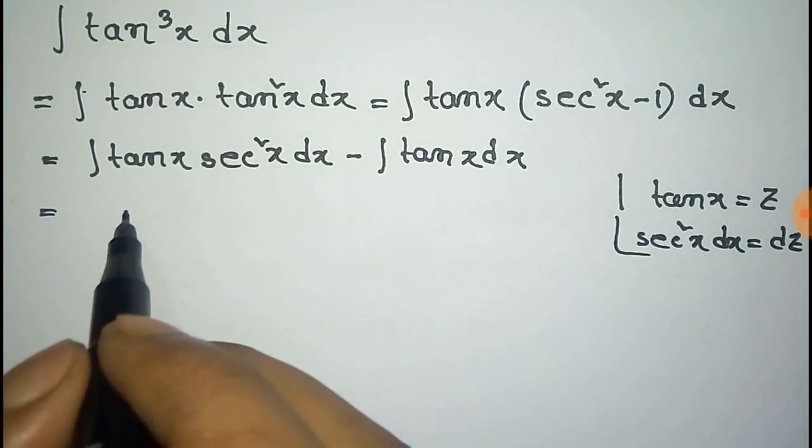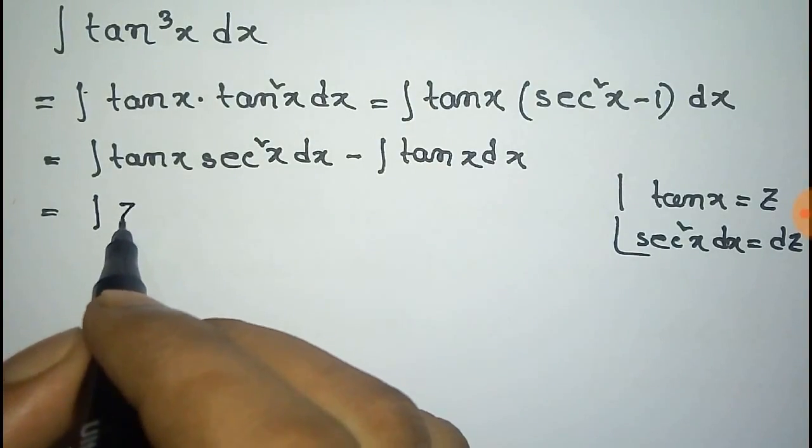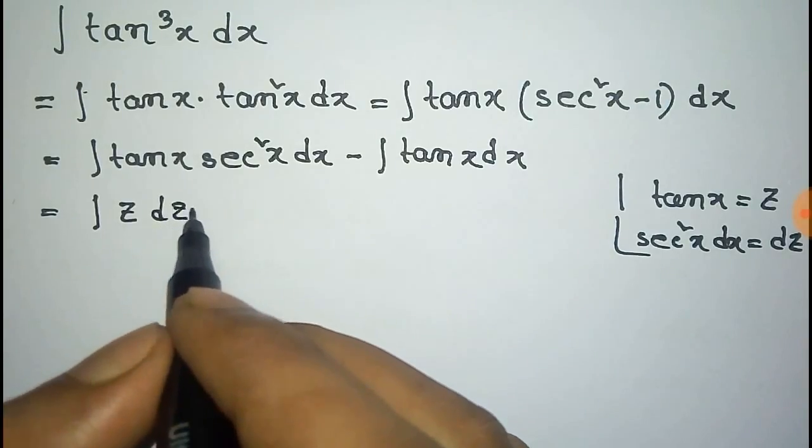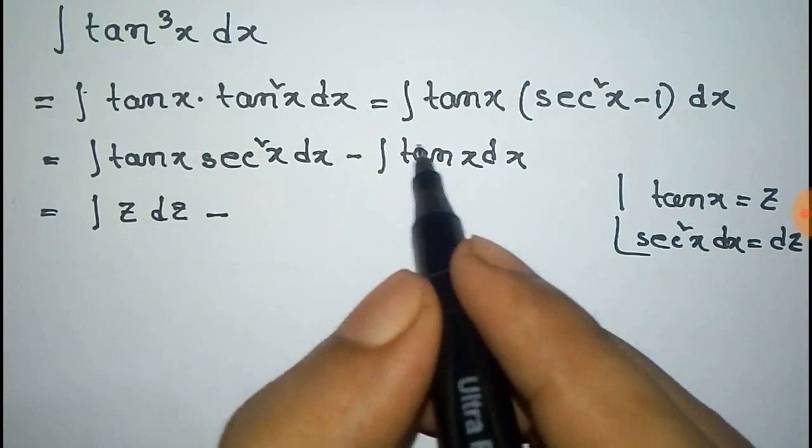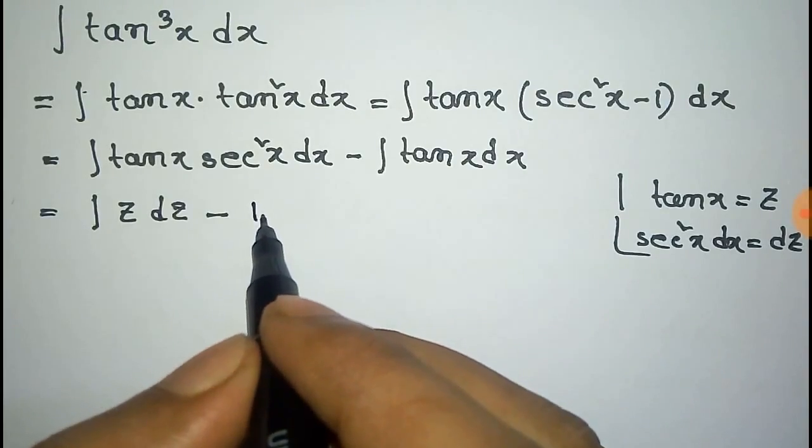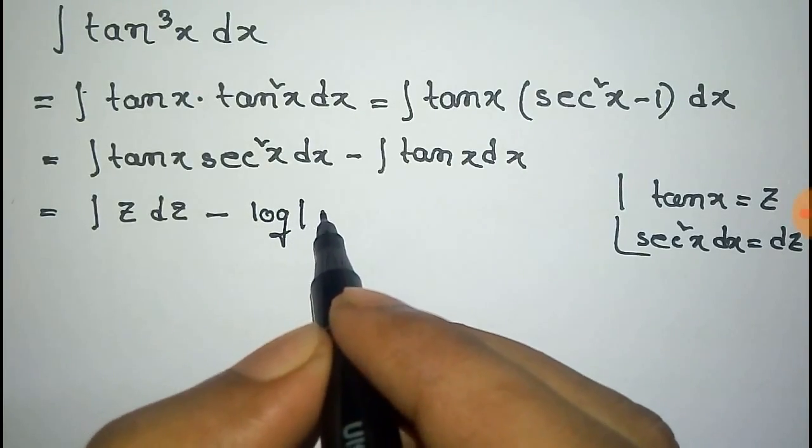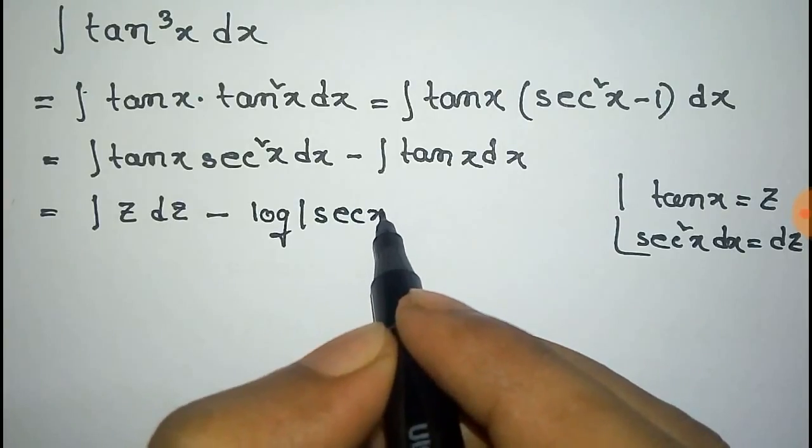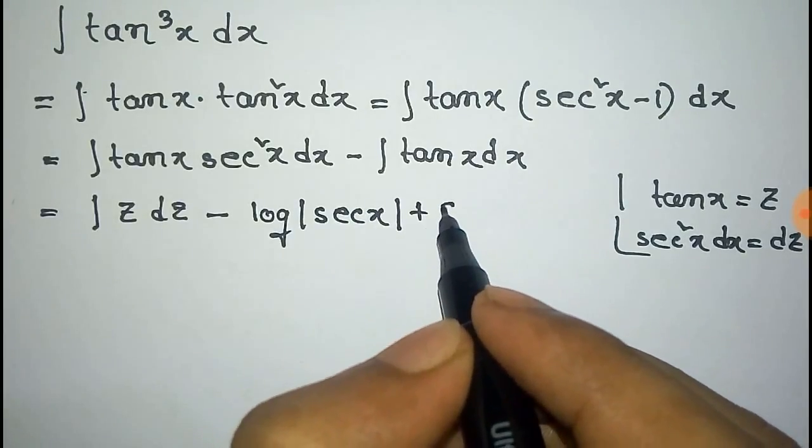Now we have to put this condition on this, so tanx equal to z and sec²x dx equal to dz minus the integration of tanx dx is log of mod of secx plus the constant c.